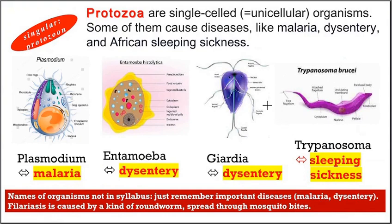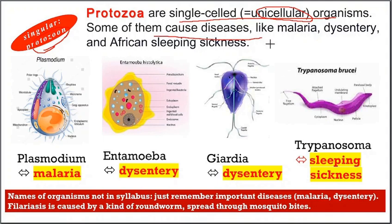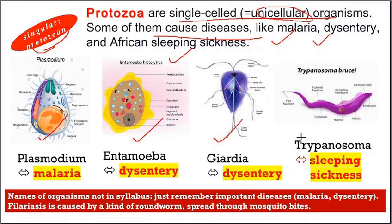Next we have protozoa (singular: protozoan). These are single-celled or unicellular organisms. Some of them cause diseases such as malaria, dysentery, and African sleeping sickness. Plasmodium causes malaria; Entamoeba and Giardia cause dysentery; and Trypanosoma causes African sleeping sickness.